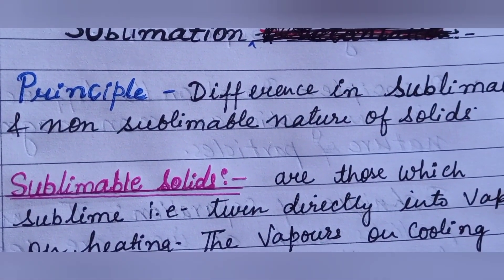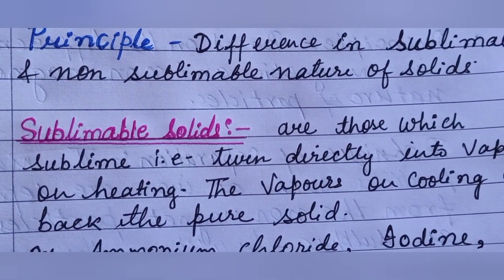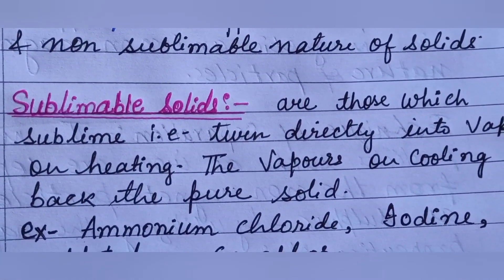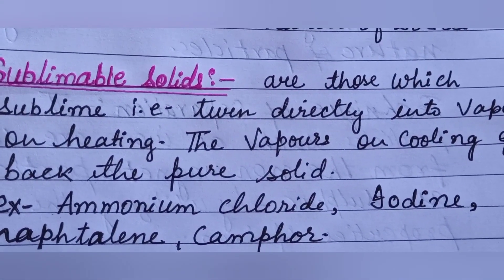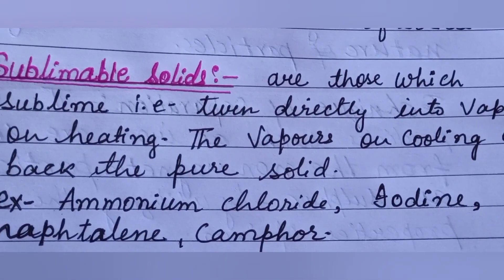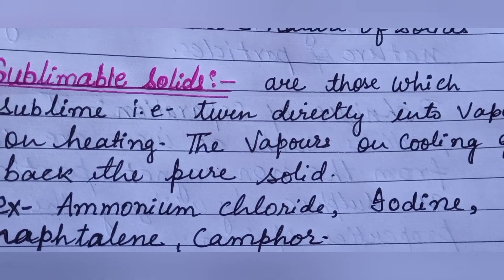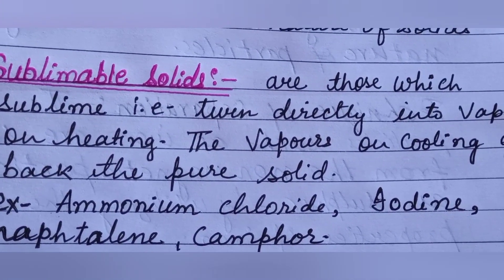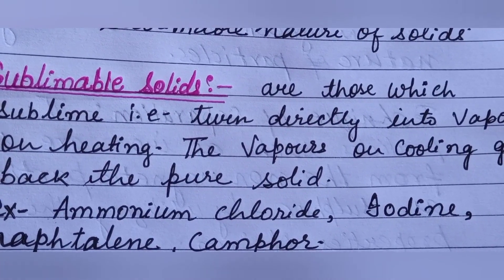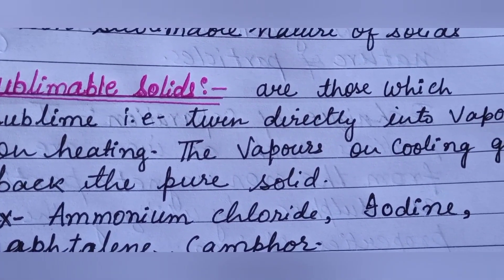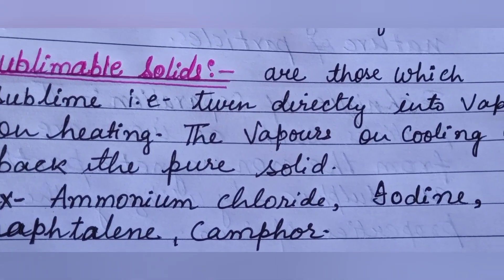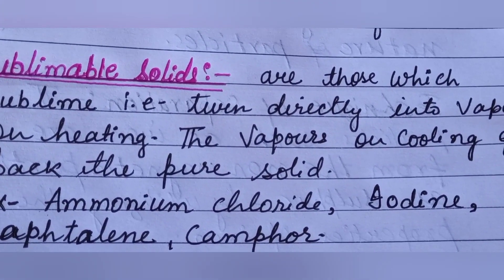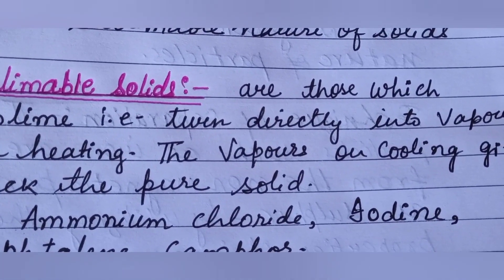Sublimation works on the principle of the difference in sublimable and non-sublimable nature of solids. Sublimable solids are those which sublime, like naphthalene. You may have seen naphthalene kept in a cupboard — when heated, it changes directly into vapor. When you open the cupboard, you won't see the naphthalene balls but will smell them, meaning the naphthalene has sublimated.